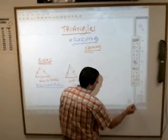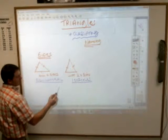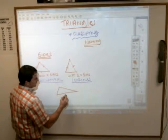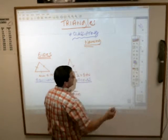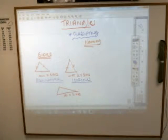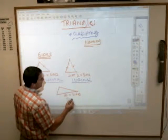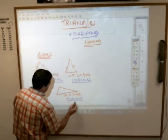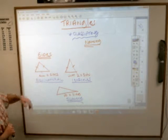Or, you could have a triangle that has no equal sides. Anybody? Kendall? It is a scalene triangle. So those are your three choices if you're classifying them by sides.